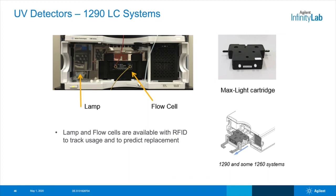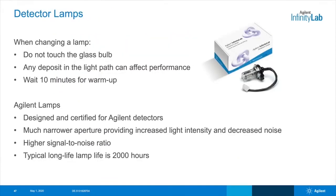Do not leave buffers in the cartridge for extended periods of time. If a leak occurs, replacement is the only option — there's no repair kit for the cartridge. The cartridge should be stored in isopropanol or methanol when not in use. Note that the MaxLite cartridges and Agilent lamps are available with an RFID tag, enabling usage tracking with certain Agilent LC systems and software. This is extremely helpful to help you map out a preventative maintenance timeline for replacement, lessening poor quality data, and reducing system downtime.